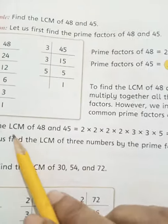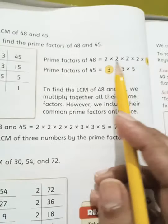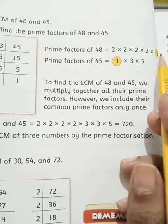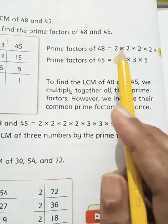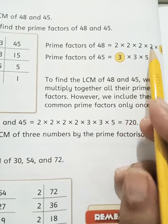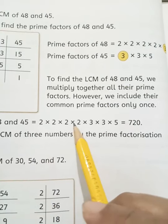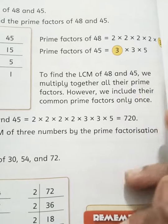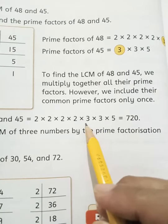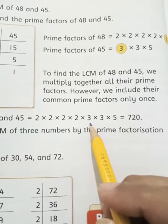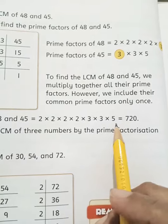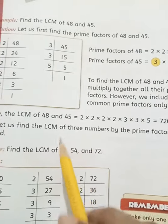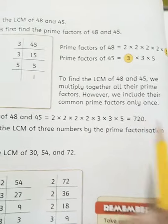अब इसको कैसे निकालेंगे — जो सारे prime factors हैं उनको multiply करेंगे, लेकिन जो common आया है उसको सिर्फ एक दफा लेंगे। 48 के factors: 2, 2, 2, 2 और 3; 45 के factor 5। 3 common है, इसलिए एक बार लिखा। सब multiply करने पर आया 720. तो 48 और 45 का LCM = 720.